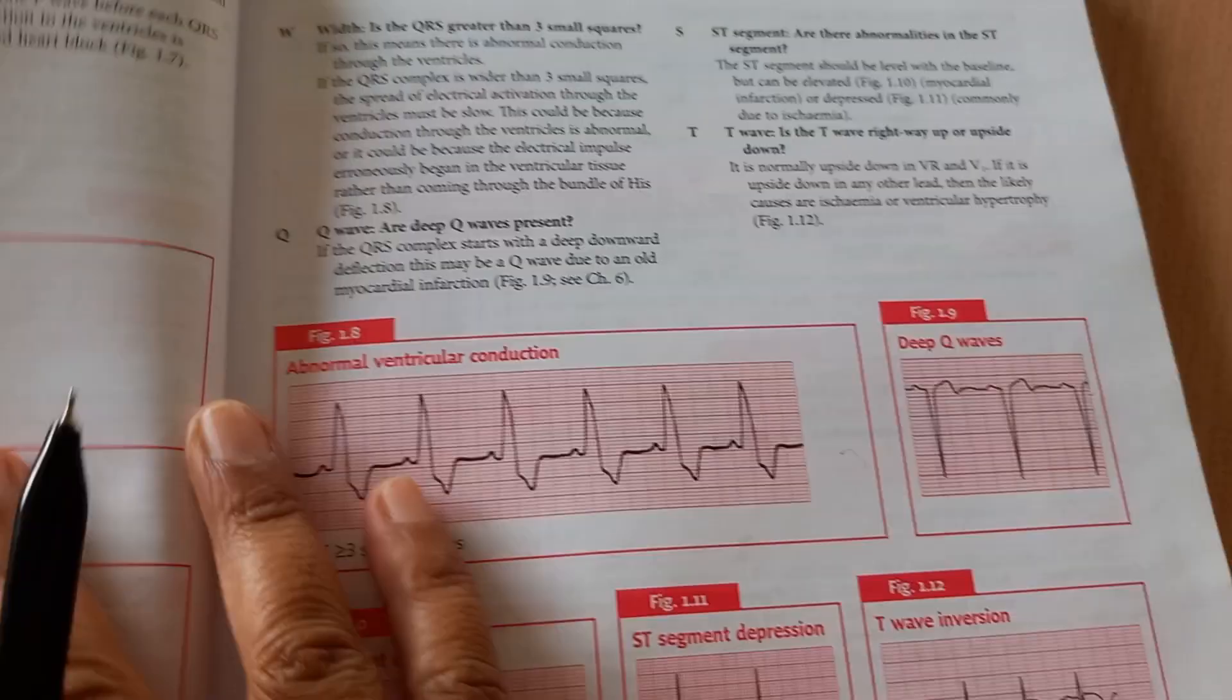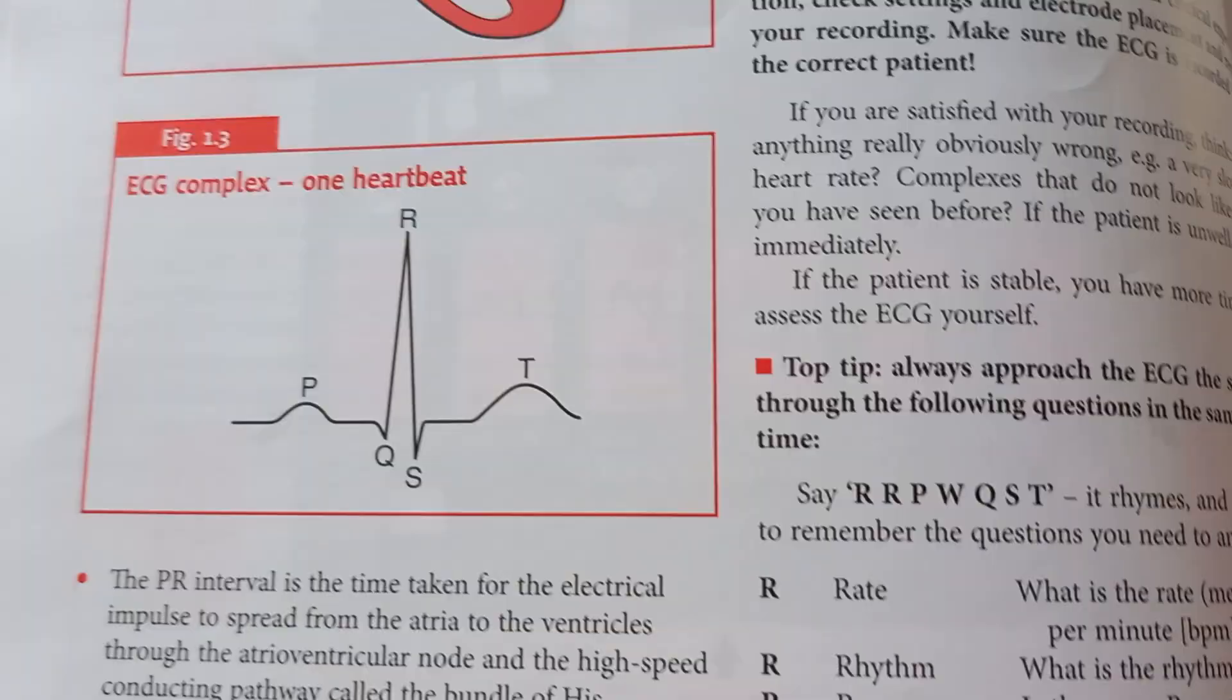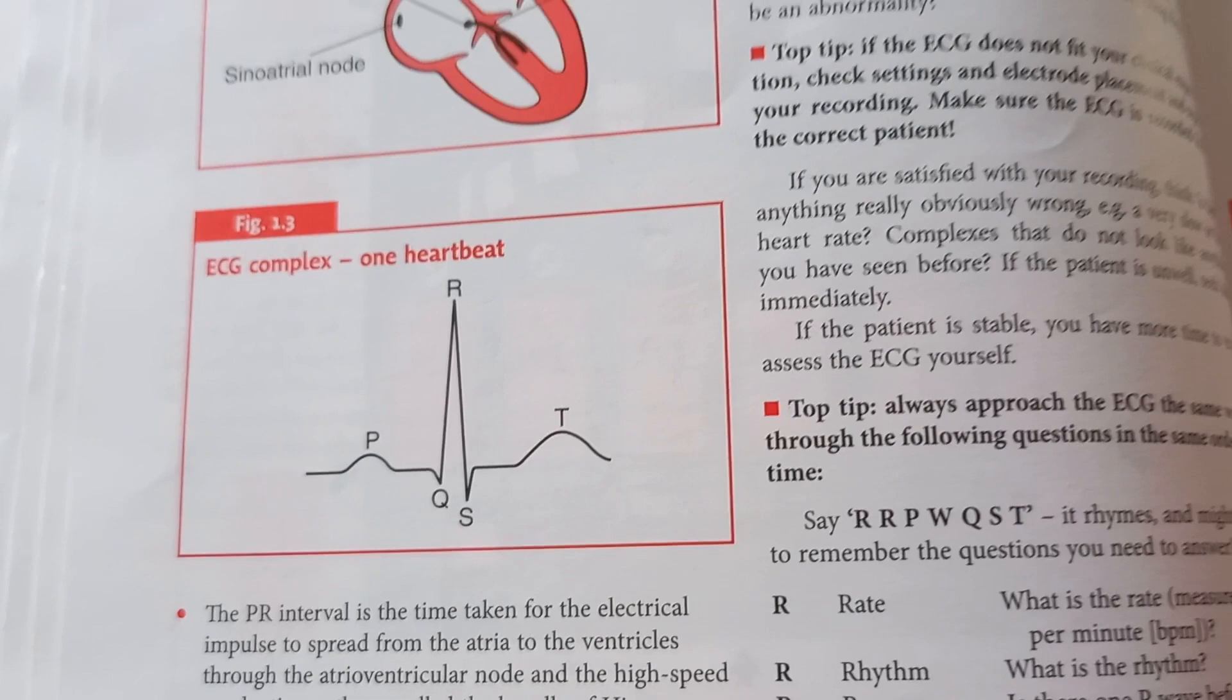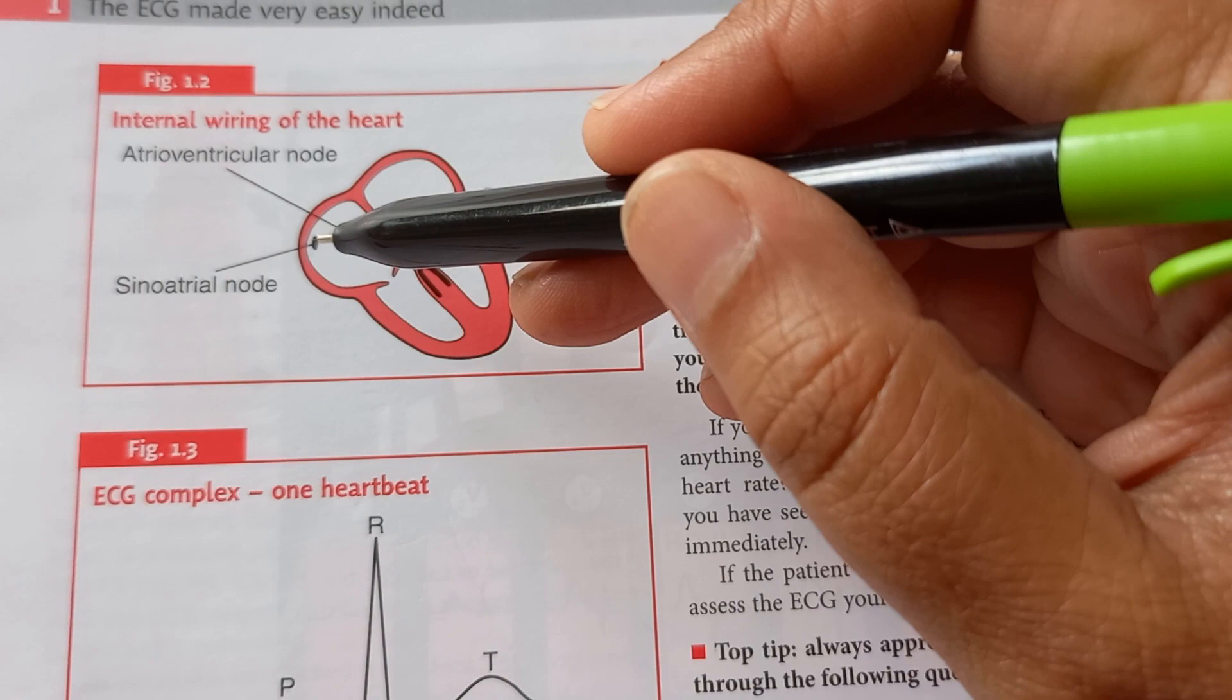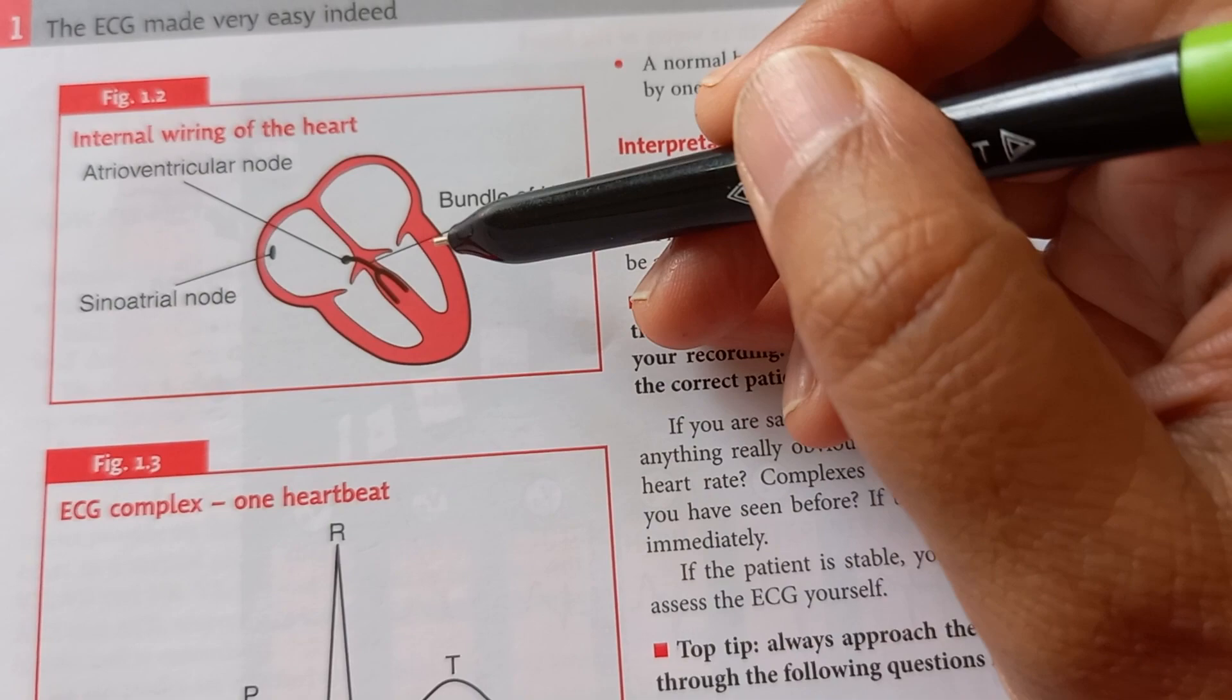Let us look at the normal ECG, the one heartbeat that they are showing. Like this: P, QRS complex, and T. There will also be a U wave. So how the electric signals are going from the sinoatrial node via the atrioventricular node, then the bundle of His, to the ventricles.